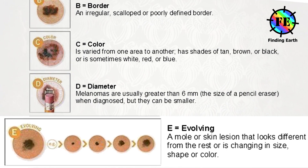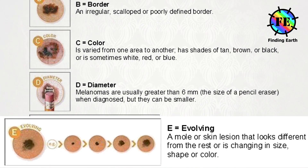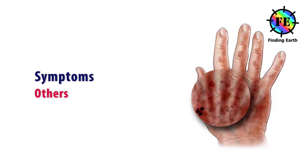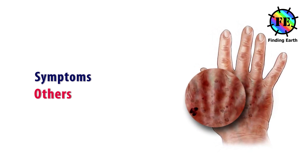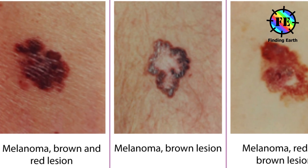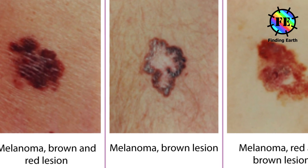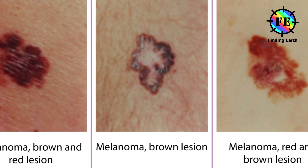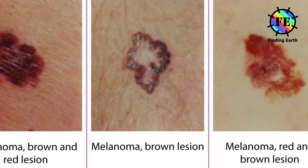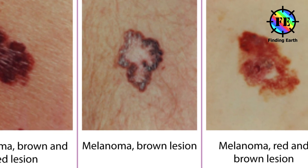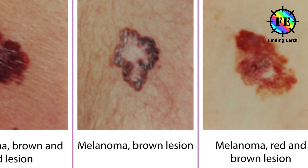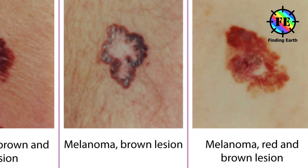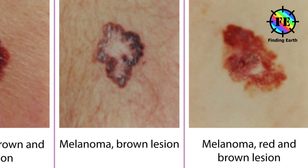Some melanomas do not fit the rules described above. Other warning signs are: a sore that does not heal, spread of pigment from the border of a spot into surrounding skin, redness or new swelling beyond the border, itchiness, tenderness or pain, and change in the surface of a mole — scaliness, oozing, or bleeding.